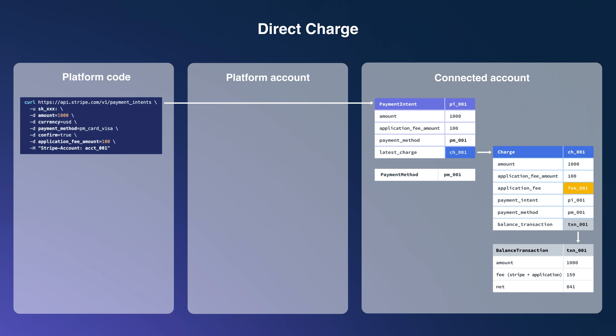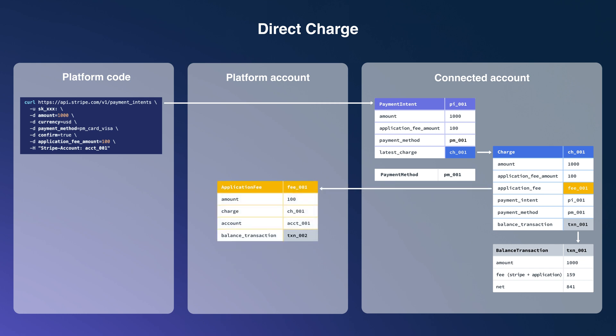Notice that for direct charges, it's the connected account that pays the Stripe fees. For other payment flows, it's the platform that pays the fees. Now let's focus on the platform account. Since we set an application fee amount in our API call, there is an application fee object that represents the money movement from the connected account to the platform account. And because funds just moved into the platform account, we also get a balance transaction object. Here we see that the platform netted $1 and paid no fees. These are all the objects involved in a direct charge, and if needed, we can use the API to retrieve any of these objects.